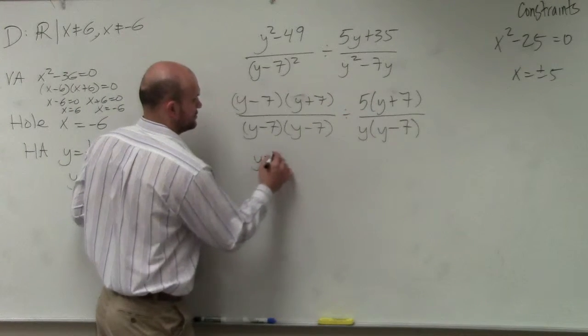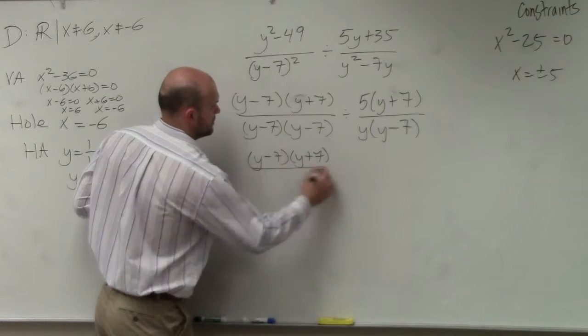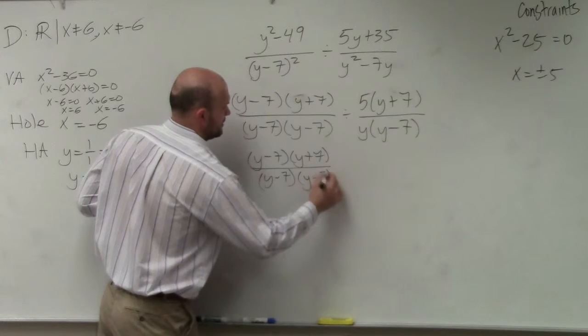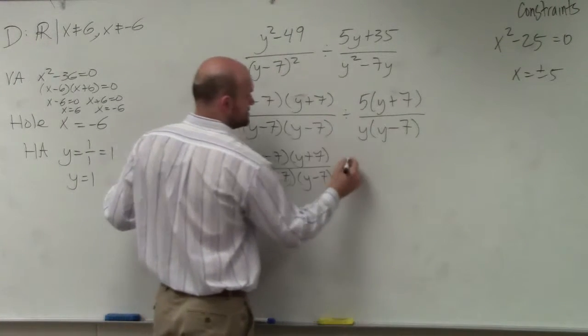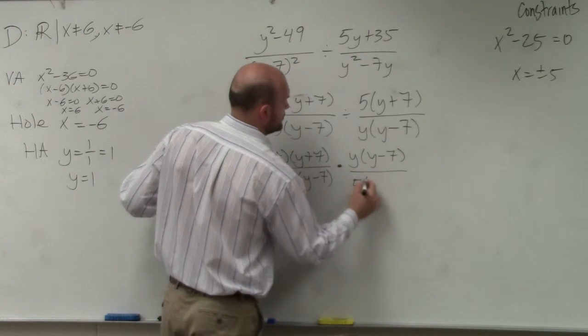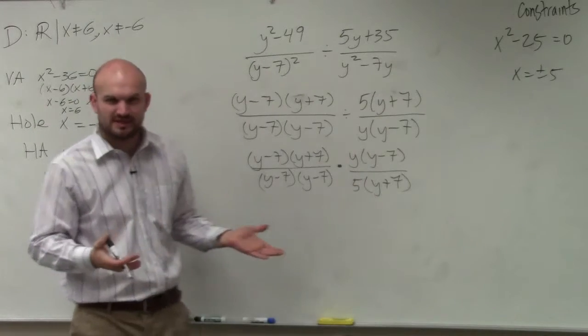So therefore, to show all my work, I'll just rewrite everything on the left side. And then I'll multiply by its reciprocal. Well, you could obviously shorten up some steps. I'm just trying to show every single step so you guys can see. But obviously, you could shorten up what I've done.